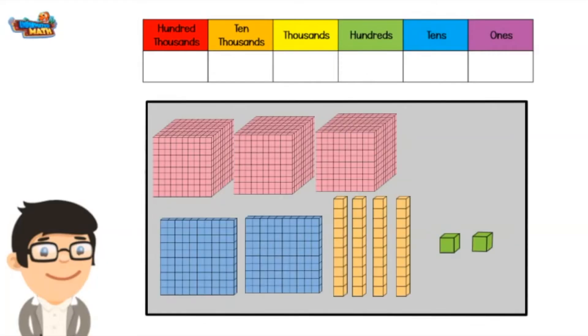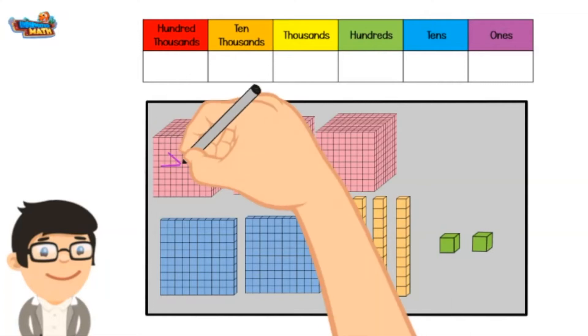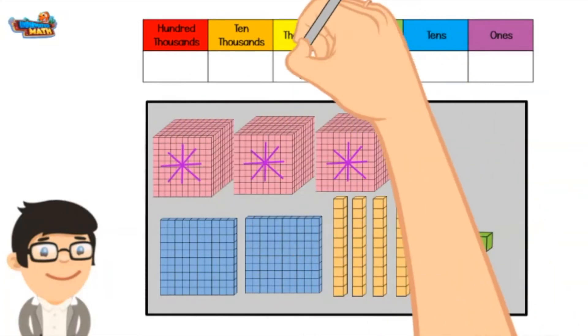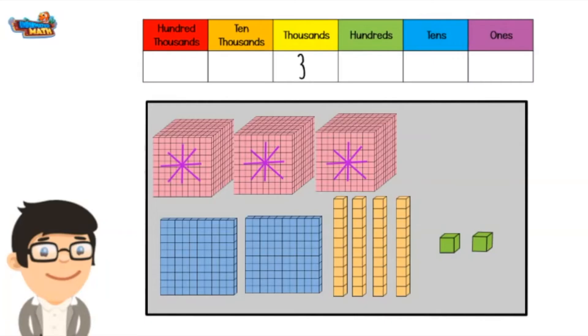Sometimes there may be examples given where the base-10 blocks are shown and you are asked to find the value. Start with the base-10 block with the biggest value. In this case, we will start with the groups of 1000. There are 3, so far we have 3000.